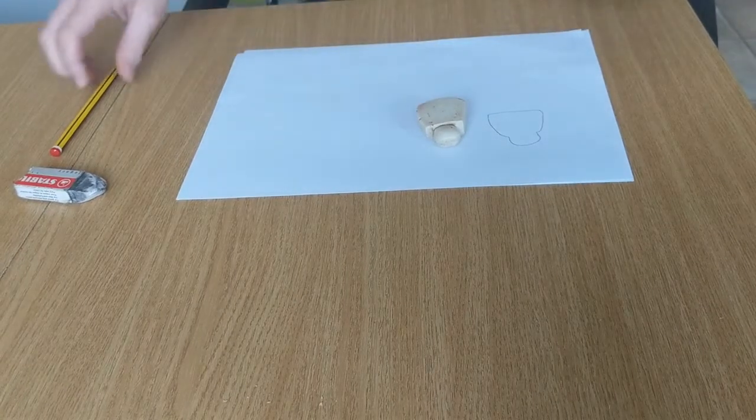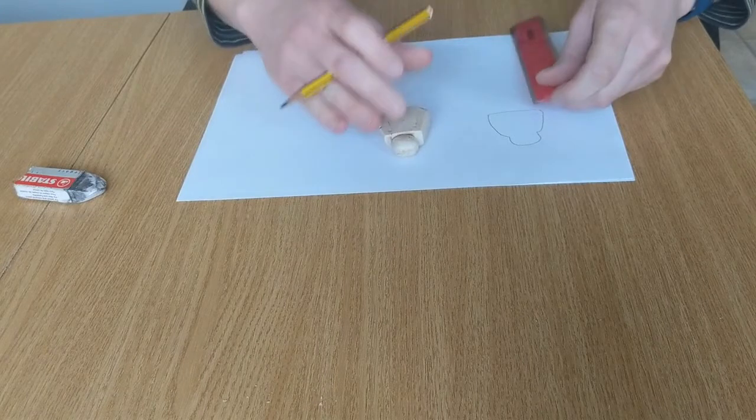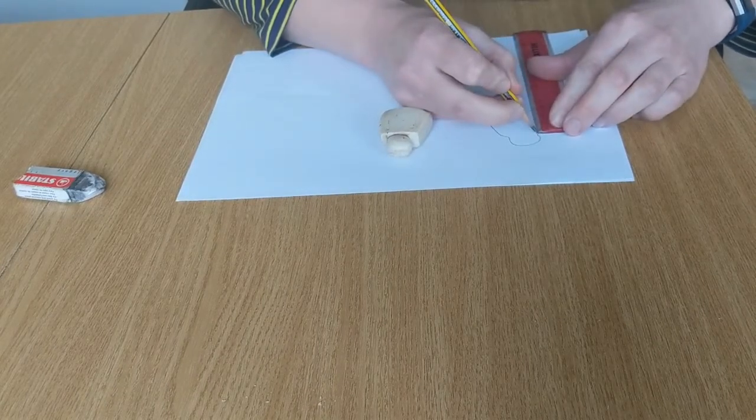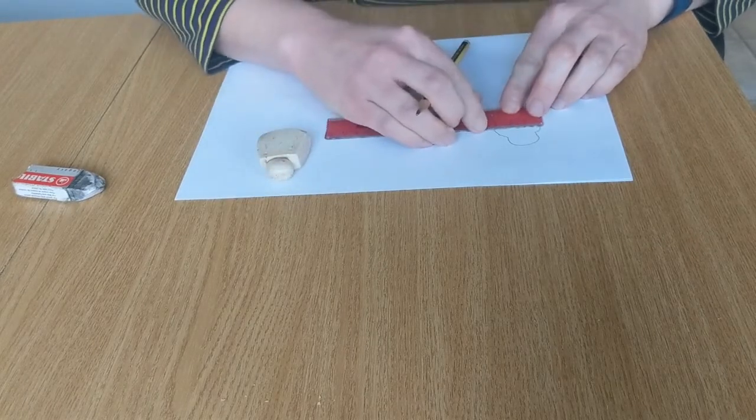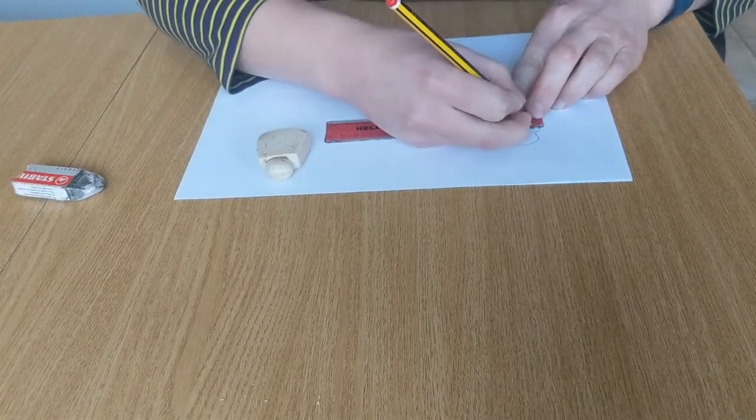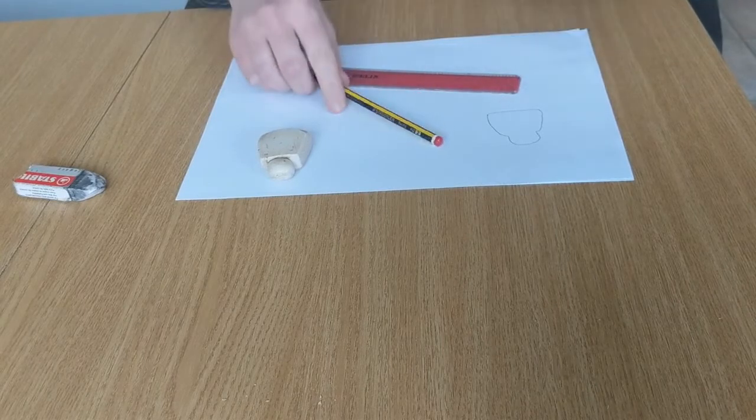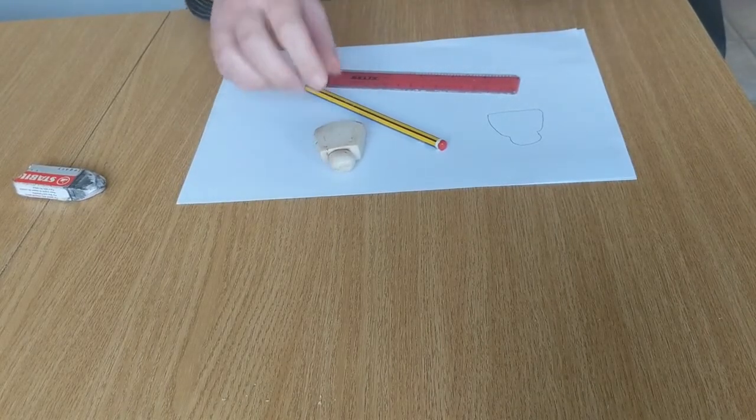So then I go four millimeters down, make a small mark, and then five millimeters from the edge, make another small mark. And then you do that for each of the different parts, so wherever the line on the object changes direction, you want to be making a little dot.